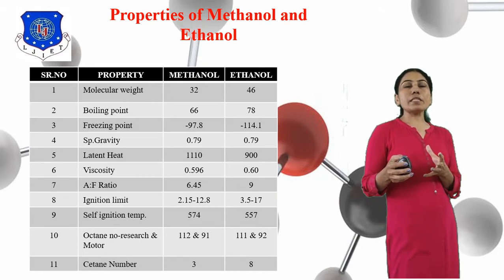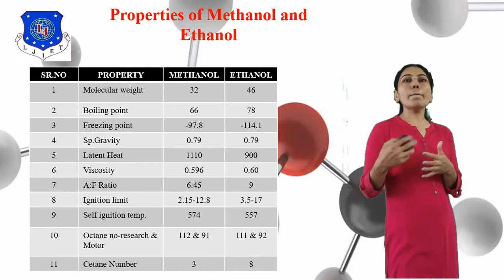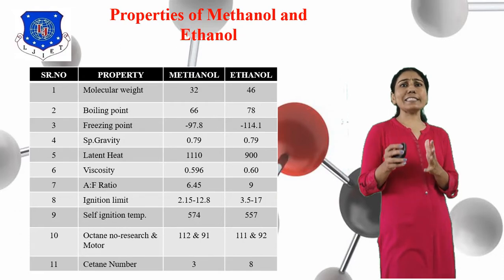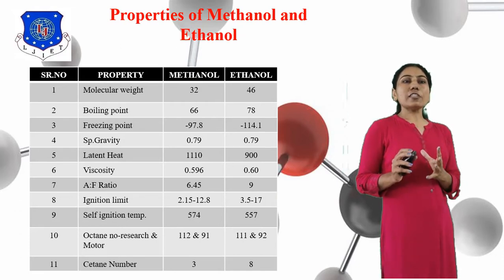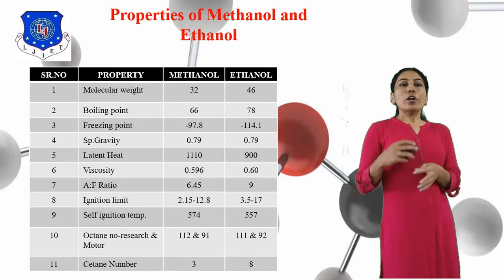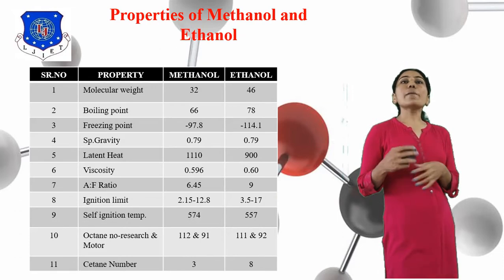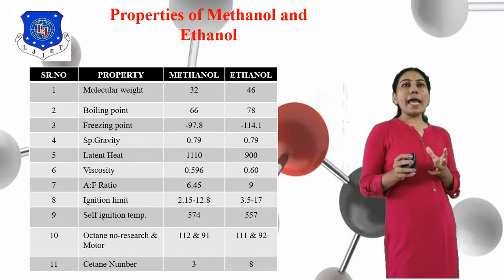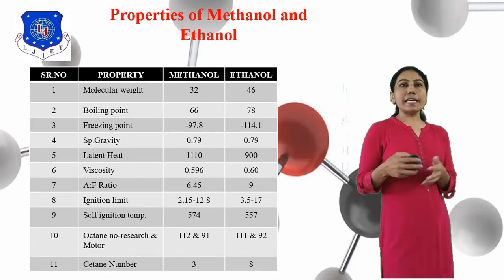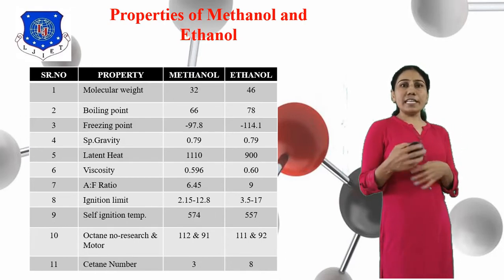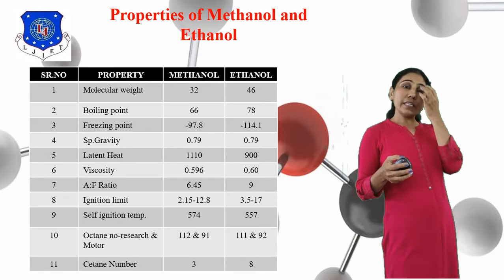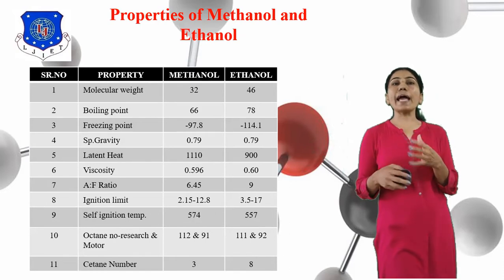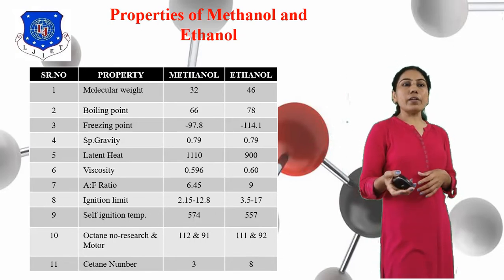Ignition limit means the range to start burning the fuel. The ignition limit of Methanol is 2.15 to 12.8 and Ethanol is 3.5 to 1.7. Self ignition temperature means the temperature at which any material ignites without change in atmosphere. The self ignition temperature of Methanol is 574 and Ethanol is 557.